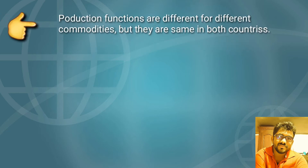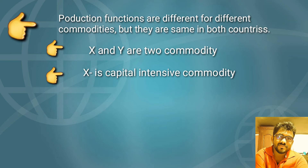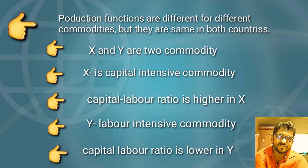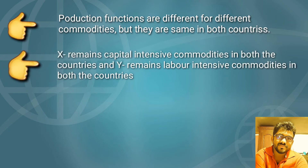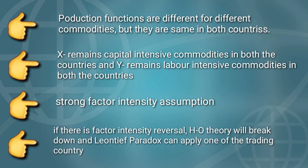One of the important and crucial assumptions of the Heckscher-Ohlin theorem is that the production functions are different for different commodities but identical for each commodity in the two countries. For example, suppose there are two commodities X and Y, where X is a capital-intensive commodity with a high capital-labor ratio, and Y is a labor-intensive commodity with a low capital-labor ratio. X remains capital intensive in both countries and Y remains labor intensive in both countries. This is also known as the strong factor intensity assumption. Without this assumption, the HO model cannot always accurately predict the structure of trade, even if the technology or production function is the same between two countries.